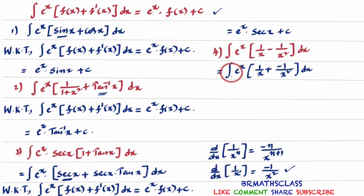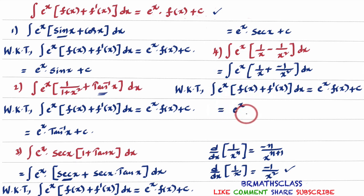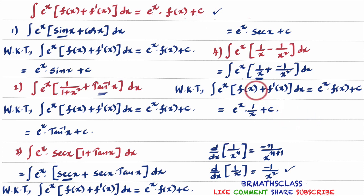So this integral is of the form: eˣ into f(x) plus f'(x) dx. We know the integral equals eˣ into f(x) plus c. From this, we write the answer directly. Here, 1/x is f(x) and its derivative is minus 1/x², so f'(x) is minus 1/x². The answer is eˣ into 1/x plus c. In the coming classes, we will do more complicated problems based on this formula.